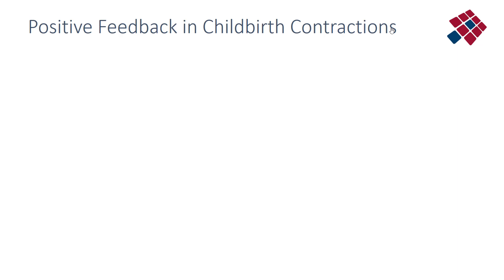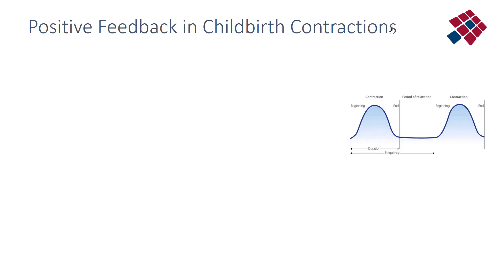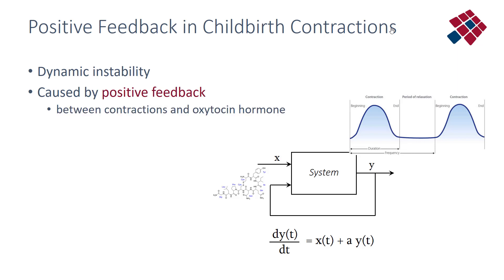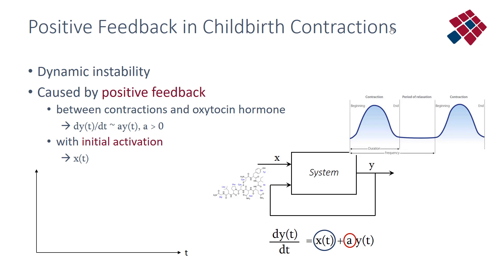Taking the example of childbirth contractions: the contractions and their intensity are the output, and the hormone oxytocin is the input. The feedback mechanism causing dynamic instability is that the contractions themselves release more oxytocin — the feedback coefficient is positive. More contractions cause more release of the hormone, more contractions, more release, and so on. If there is an initial activation — an initial release of the hormone — the input may become zero, because once the process starts, it is self-sustaining and unstable.